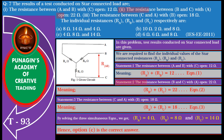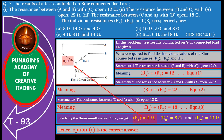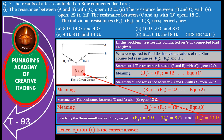Consider statement 2: the resistance between B and C with A open is 22 ohm, meaning RB plus RC equals 22. Consider statement 3: the resistance between C and A with B open is 18 ohm, meaning RA plus RC equals 18. By solving these three simultaneous equations, we get RA equals 4 ohm, RB equals 8 ohm, and RC equals 14 ohm. Hence, option C is the correct answer.